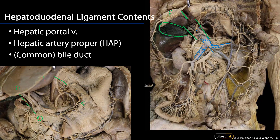Another major content of the hepatoduodenal ligament is the hepatic artery proper. That hepatic artery proper branches into right and left hepatic branches, and we're going to have the cystic artery coming off typically that right hepatic branch. And last but not least, there is the common bile duct. The common bile duct comes up and at this point it receives the cystic duct and the common hepatic duct. So we have the common bile duct, the hepatic artery proper, and the hepatic portal vein all within the hepatoduodenal ligament.